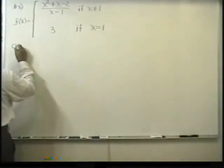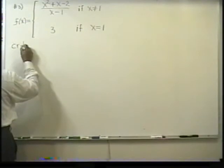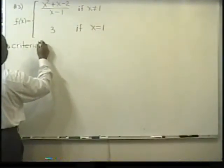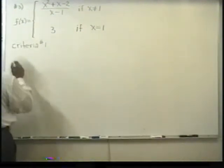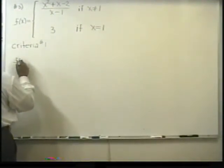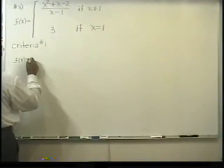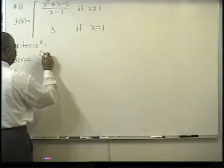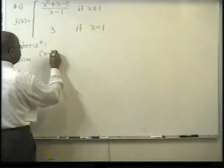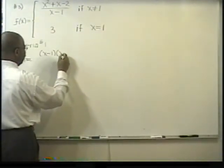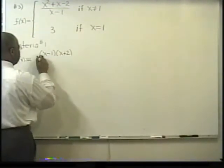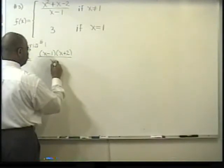We can factor that. So I'm going to go through it step by step again. So right now, we're looking at criteria number one of the definition of continuity. Does the limit exist? So right now, we know that f of x, the numerator, can be factored into x minus one times x plus two divided by x minus one.